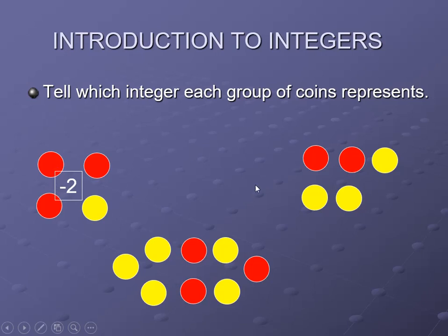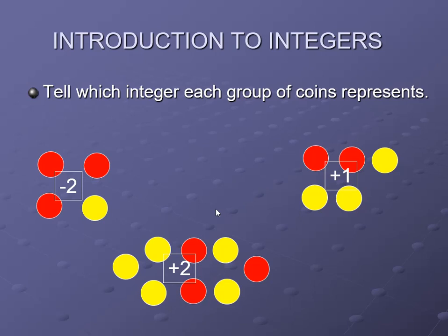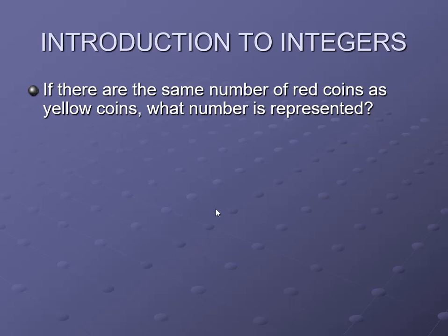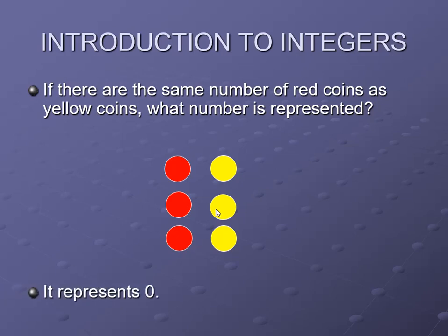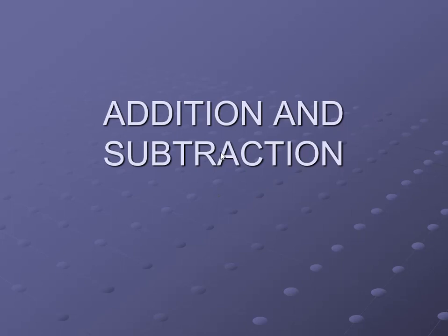In the second group, when the red and yellow coin pairs cancel, the remaining one yellow coin represents a positive number — so it is plus 1. For the third diagram, each pair cancels one by one, and two yellow coins are left, which represents plus 2. If there are the same number of red coins as yellow coins — for example, three red and three yellow — they all cancel and the result is zero.